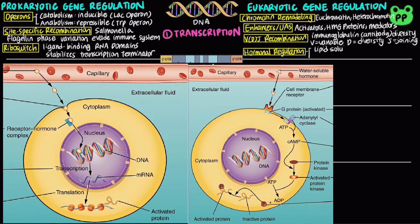On the other hand, water-soluble hormones, such as insulin, bind to cell surface receptors and activate other proteins. In an enzyme cascade, eventually some of the products may act as transcription factors, such as the cAMP response element. More details about hormone classification have been covered in my previous video on chemical signals.